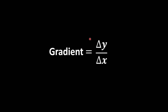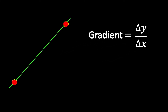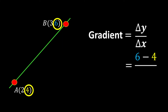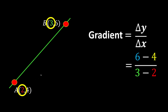Gradient is nothing but just a change in y divided by the change in x. This triangle symbol means the change. To find the gradient, we need to have at least two points. So let's say we have points a and b. To find the gradient, we find the change in y and the change in x — 6 minus 4 for the change in y, and 3 minus 2 for the change in x — which gives us 2.